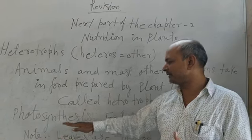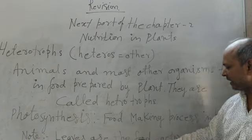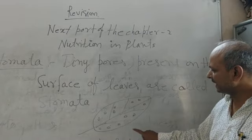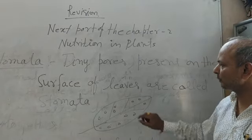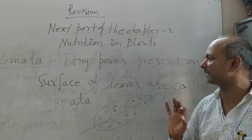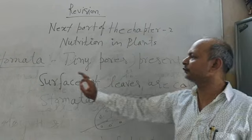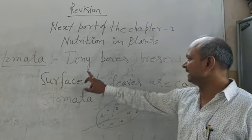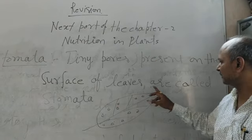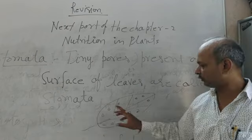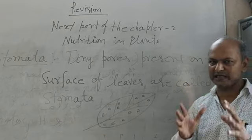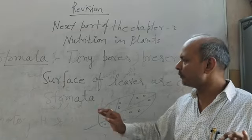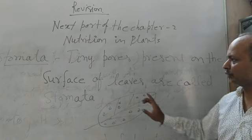Leaves have something called stomata. Stomata means tiny pores, small holes present on the surface of leaves. These are a very important part of the plant, called stomata.